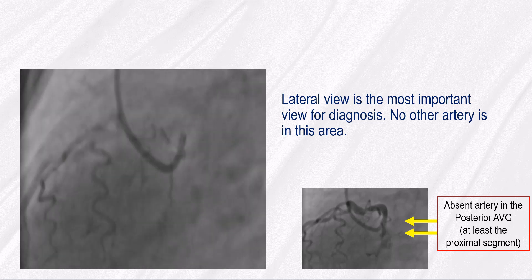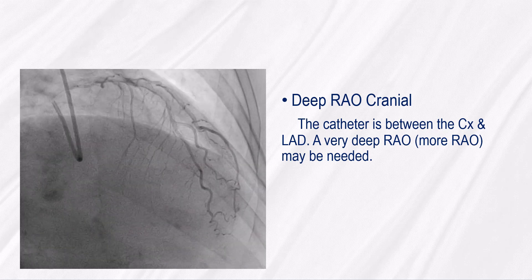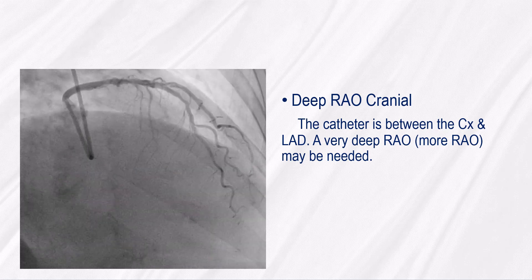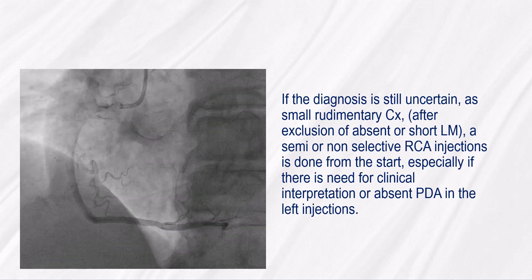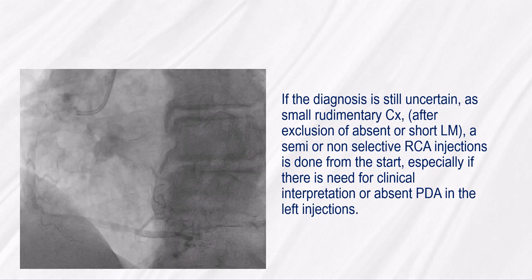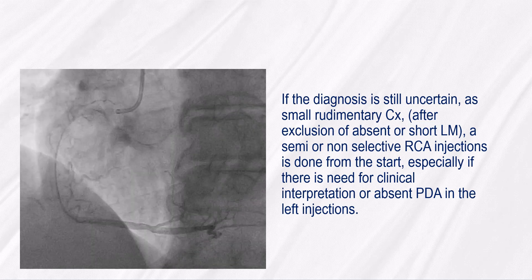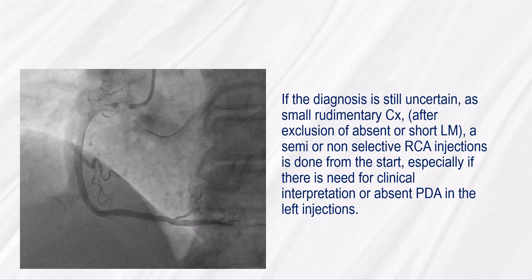No other artery is in this area. In the deep RAO cranial, the catheter is between the CX and the LAD; a very deep RAO with more RAO may be needed. In both views, at least look at the proximal segment of CX in cases of a small non-dominant CX. If the diagnosis is still uncertain, as in cases of small rudimentary CX and after exclusion of absent or short left main, a semi or non-selective RCA injection is done from the start, especially if there is clinical indication or absent PDA in the left injections.